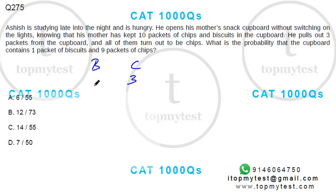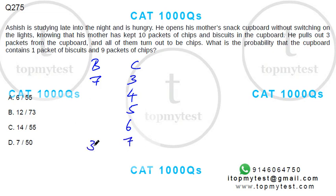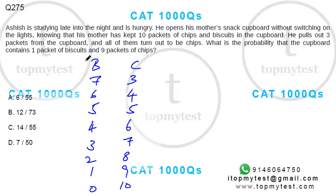So the possible distributions are: 3 chips and 7 biscuits, 4 chips with remaining biscuits, 5 chips, 6 chips, 7 chips and 3 biscuits, 8 chips and 2 biscuits, 9 chips and 1 biscuit, or 10 chips and 0 biscuits. The question asks: what is the probability that the cupboard contains 9 packets of chips and 1 biscuit?